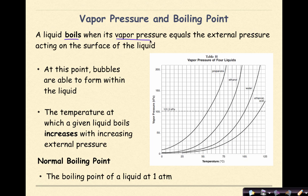Now let's talk about vapor pressure and boiling point. A liquid boils when its vapor pressure equals the external pressure acting on the surface of the liquid. At this point, bubbles are able to form within the liquid itself. The temperature at which a given liquid boils increases with increasing external pressure. So as we increase the vapor pressure, we can see the temperature at which these liquids boil will also increase. The normal boiling point is the boiling point of a liquid at one atmosphere. So 101.3 kPa is equal to one atmosphere. And the normal boiling point here is defined as the dotted line.